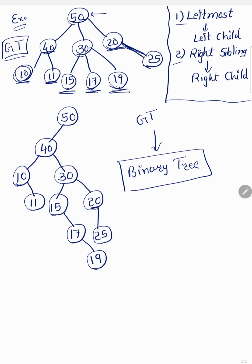This is the simple conversion from general tree to binary tree. Just keep two things in mind: the leftmost child becomes the left child, and the right sibling becomes the right child. In other lectures we'll cover types of binary trees — complete binary tree and strictly binary tree. Thank you very much for watching.